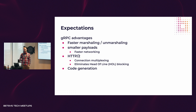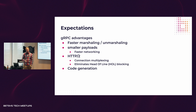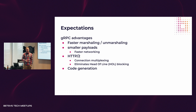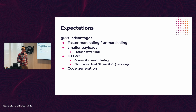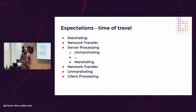What are the expectations? On paper, gRPC should be faster. It has faster marshalling and unmarshalling, it uses binary so payloads are smaller, meaning slightly faster networking. Since it uses HTTP/2 we can multiplex connections, eliminating the head-of-line blocking issue where the first request blocks others in the queue. Another nice thing about gRPC is it can generate code for almost every known programming language.